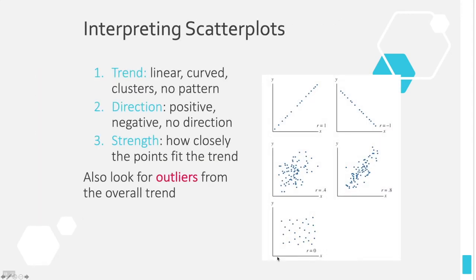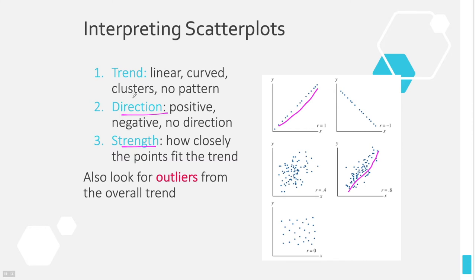When we look at the graph of the regression line and the scatterplot data, there are three things we can say about it. Direction can be positive, negative, or zero. Strength: a perfectly linear scatterplot would be perfectly strong; a tightly clustered one is pretty strong; a loosely scattered one is weak; and one with no pattern has no association at all. In addition to direction and strength, we note the form — is it linear, curved, clustered, or no pattern? We should also look for outliers.